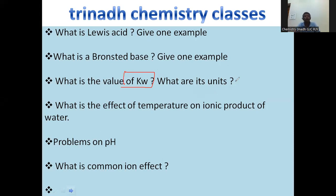What is the effect of temperature on ionic product of water? If temperature is increased, ionic product of water increases. Kw value at 25 degree centigrade is 1.0 into 10 to the power of minus 14 moles square per liter square. We have to look for problems on pH.